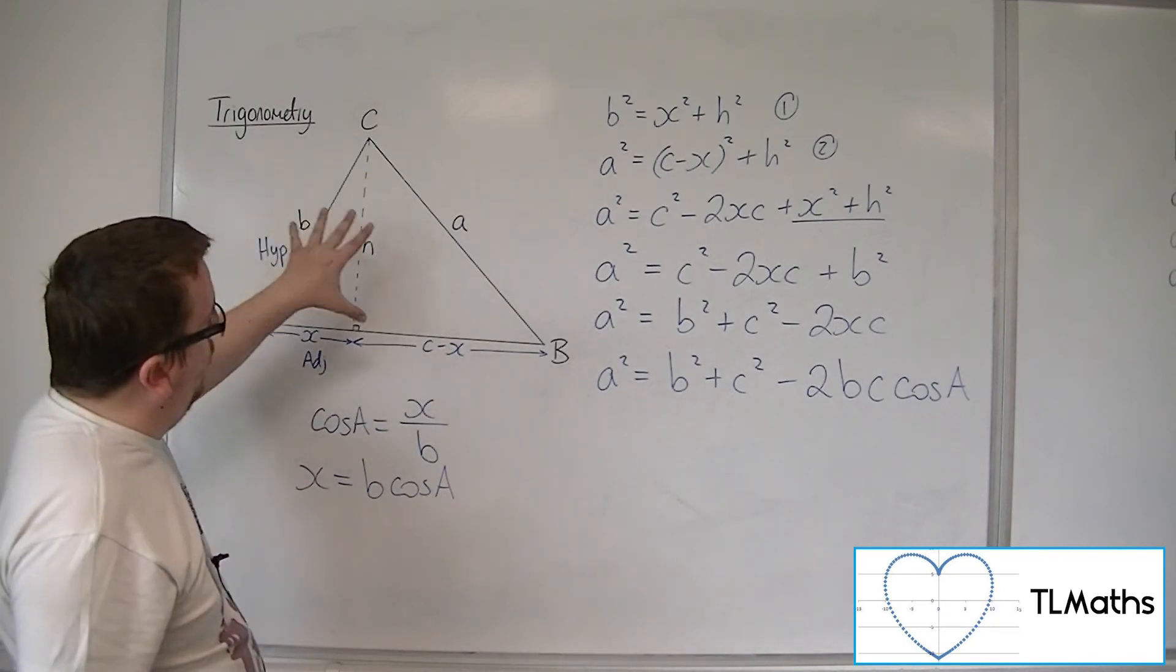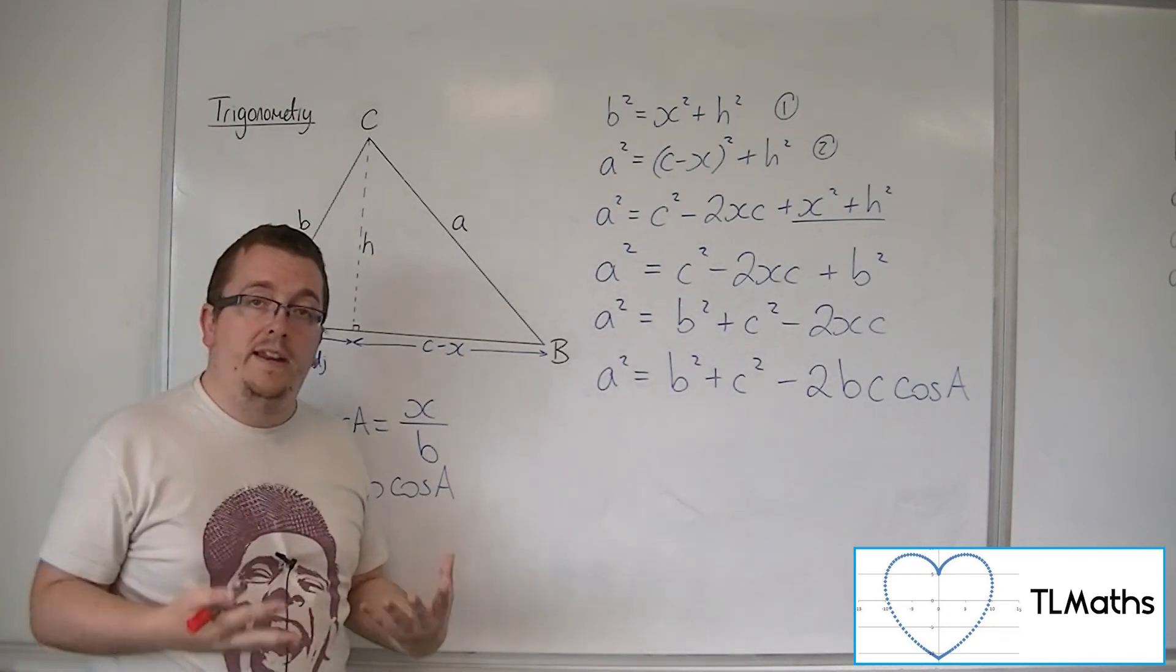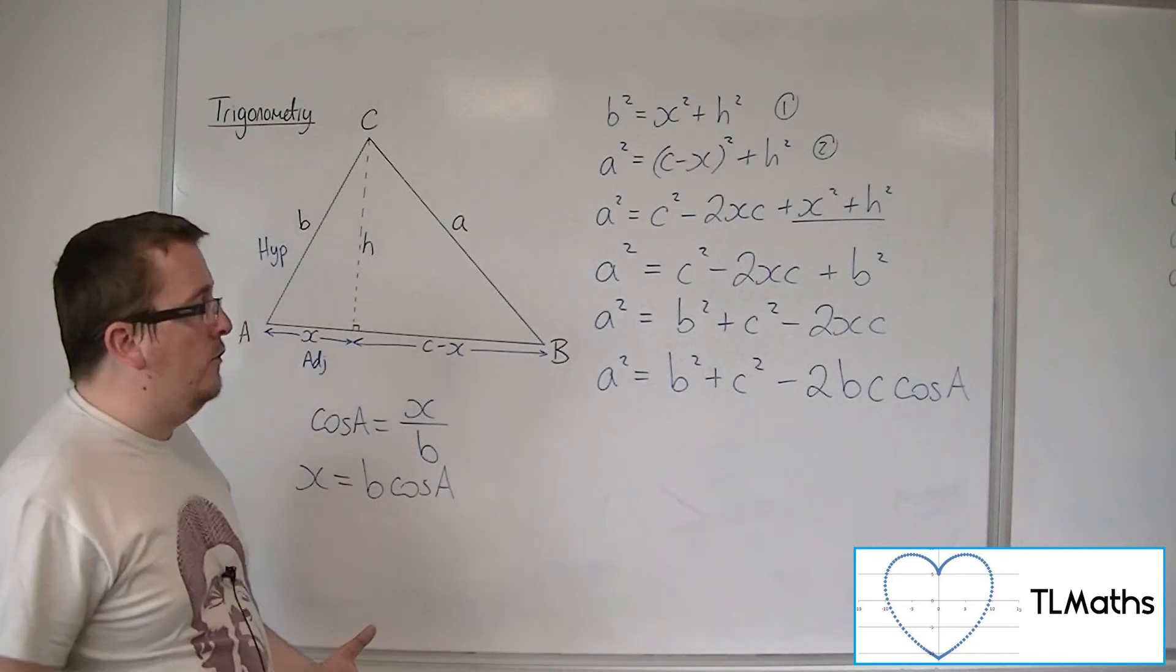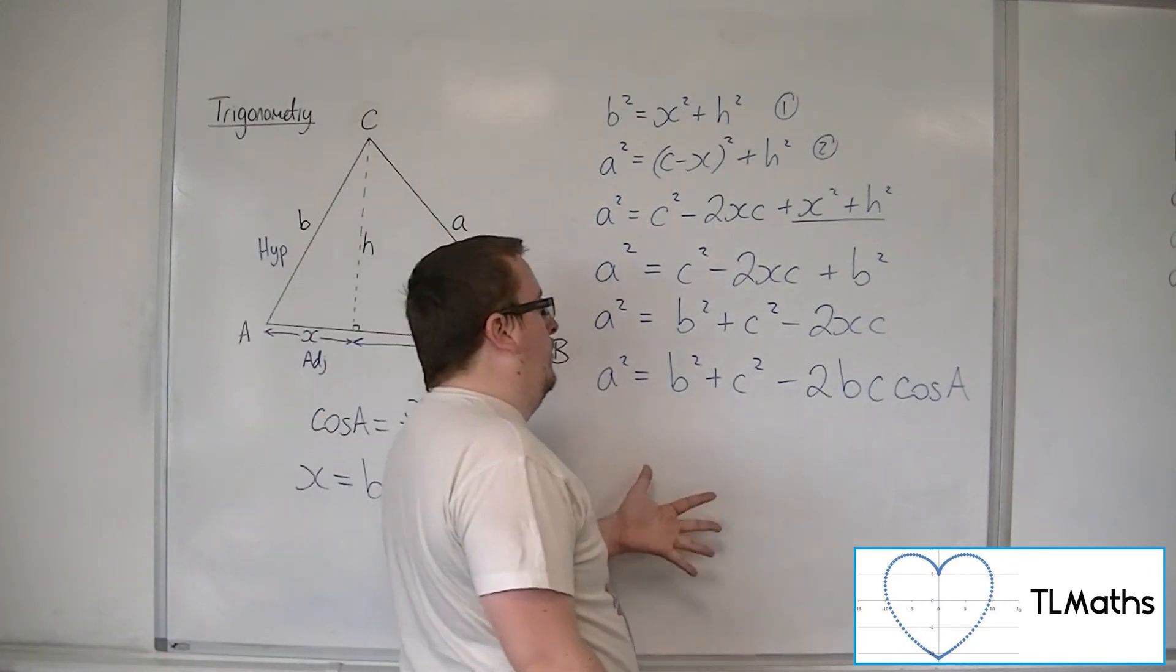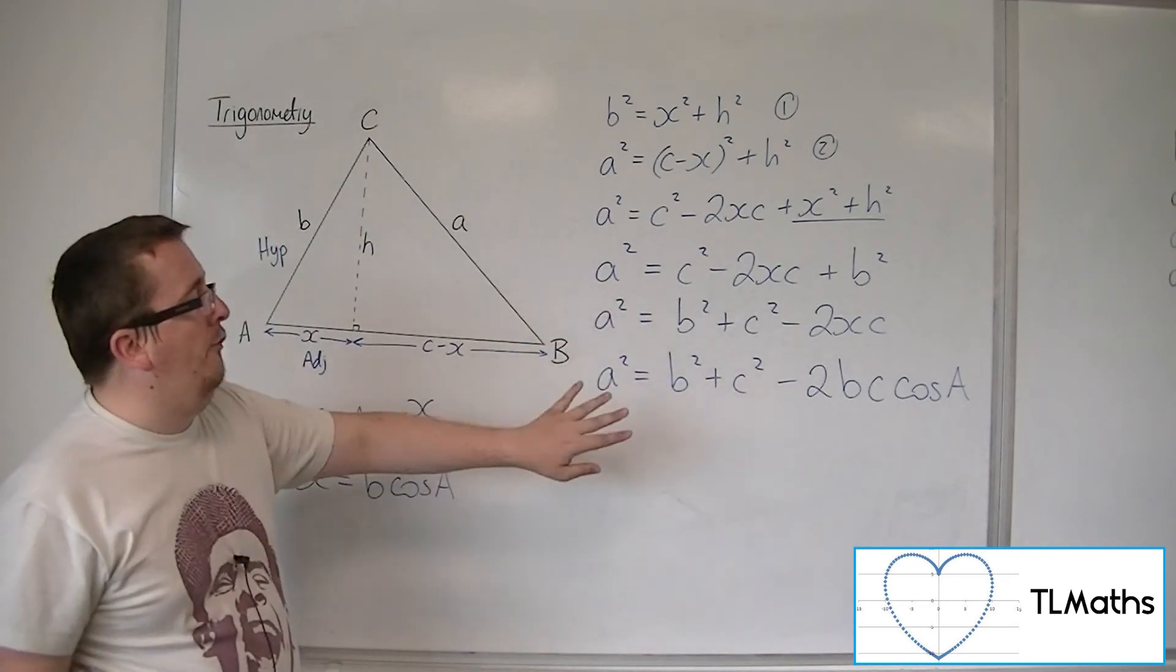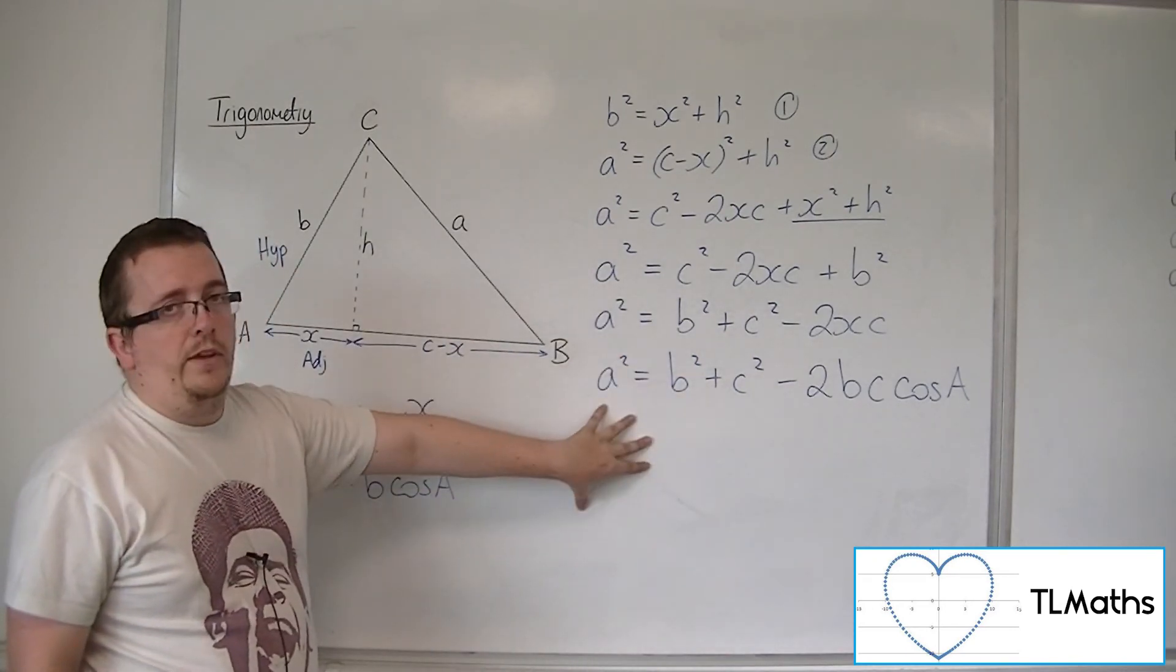Or if you've got all three sides and you want to find an angle, you use the cosine rule. But when you've got all three sides and you want to find the angle, this isn't in the best format that you can use it.